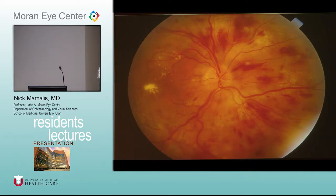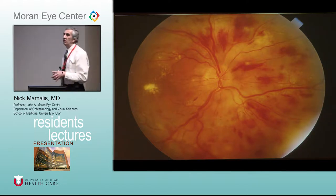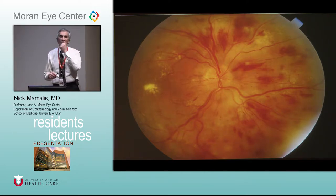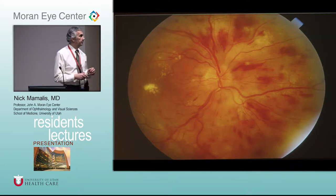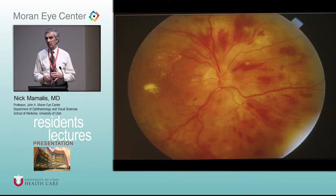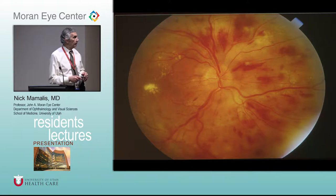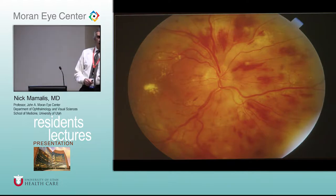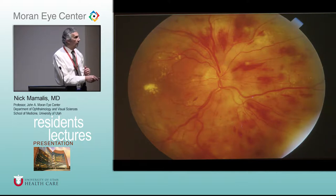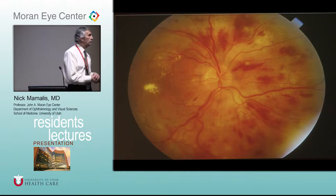Now we'll get into specific diseases affecting the retina. One of the most common problems is vascular disease. You see a lot of exudates and hemorrhages in different layers of the retina. Why do flame hemorrhages look like flames and why do dot-blot hemorrhages look like dots and blots? The nerve fiber layer — as the axons come out of the ganglion cells, they run along the surface into the optic nerve. Hemorrhages along that surface layer are shaped like a flame; hemorrhages deeper are called dot and blot hemorrhages.